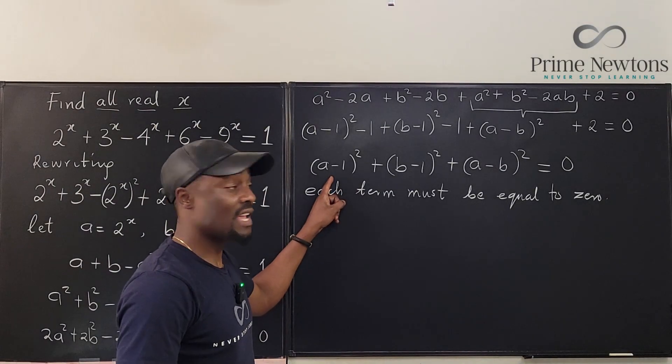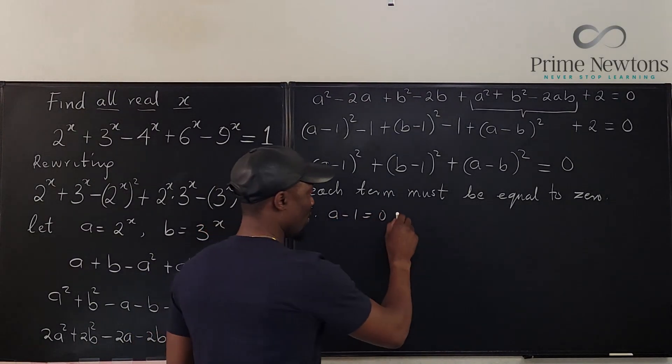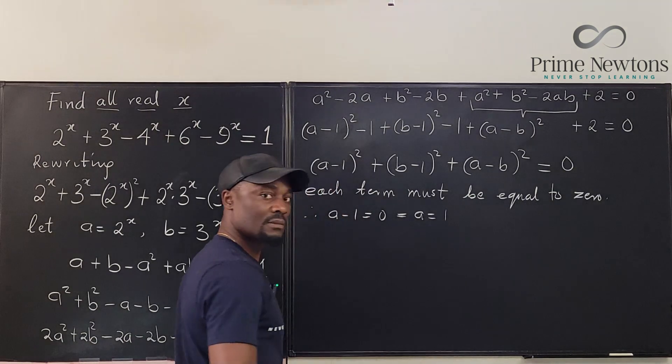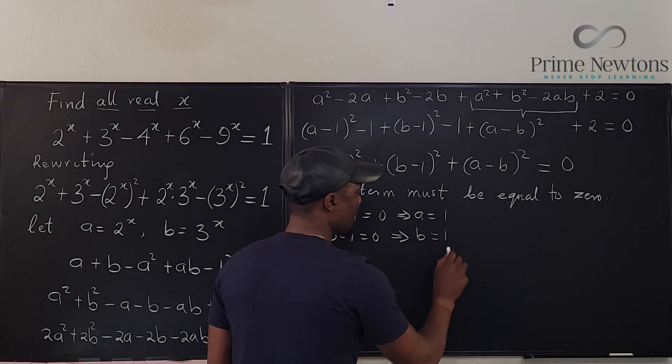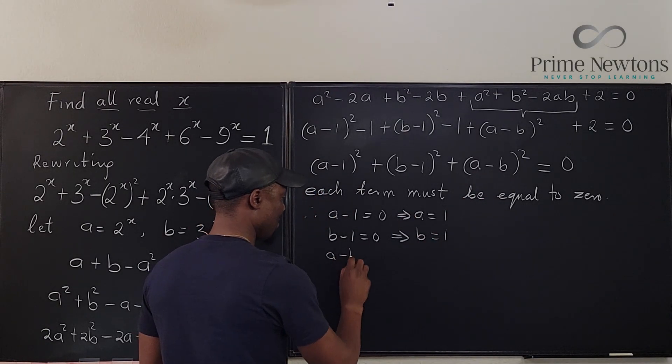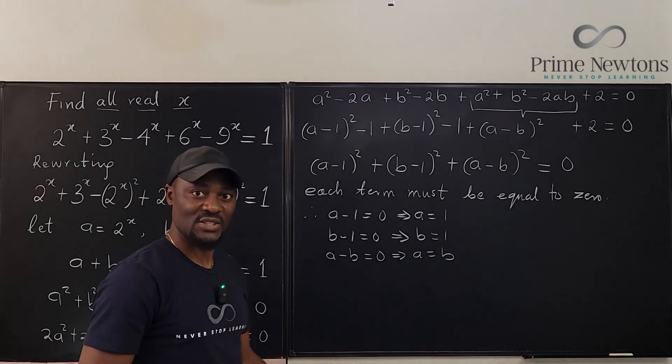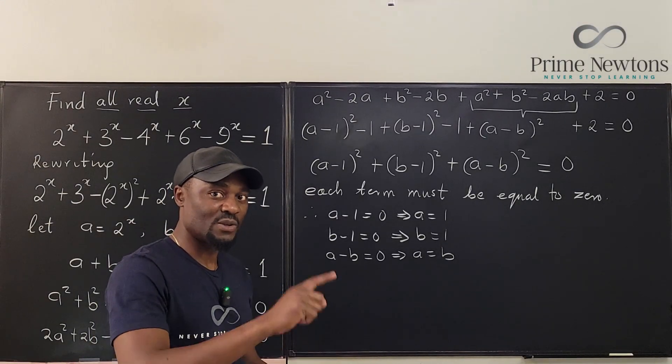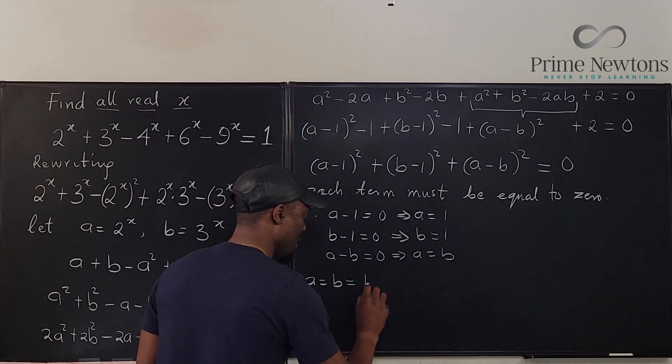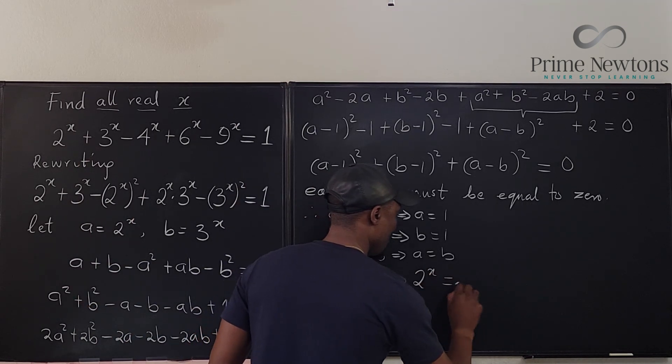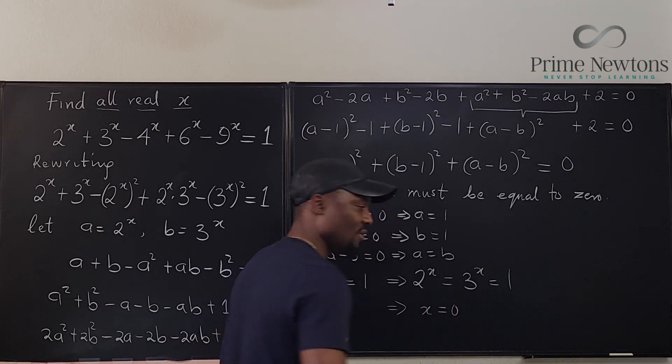Therefore, if this is equal to zero, then a - 1 = 0 which implies a = 1. b - 1 = 0 which implies b = 1. And a - b = 0 which implies a = b. You can already see that, so a = b = 1. This implies 2^x = 3^x = 1, which implies that x = 0.